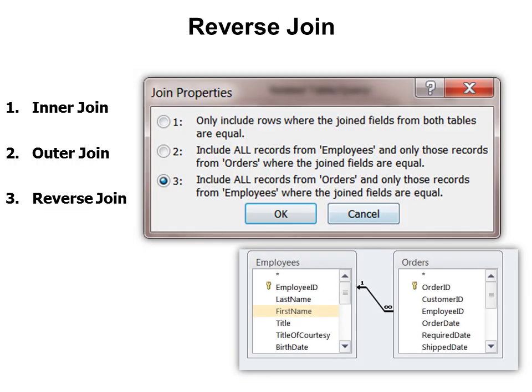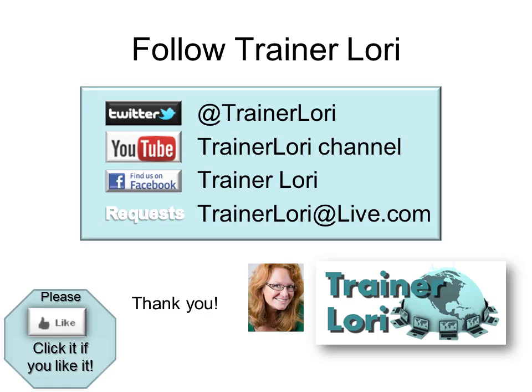So what is a reverse join? That is just the opposite of the outer join. It says show all orders whether or not there's an employee — in other words, it's going to find your orphan records. That's all for now. If you like it, please click like. And if you have any requests for training topics, please write to me at trainerlaureatelive.com. Thank you. We'll see you next time.